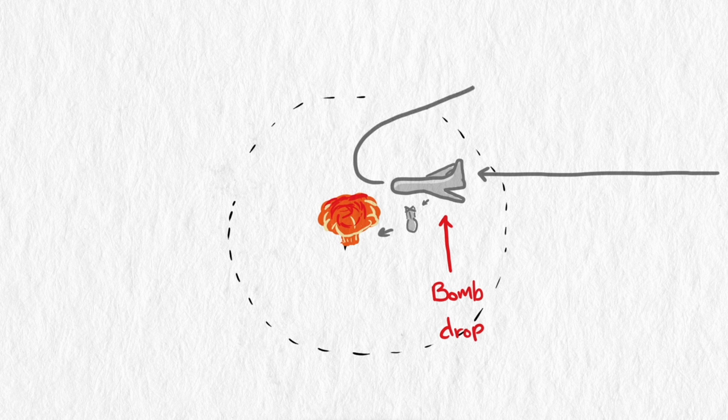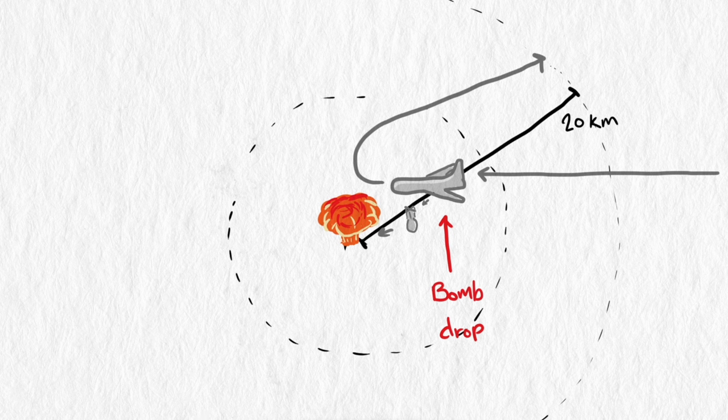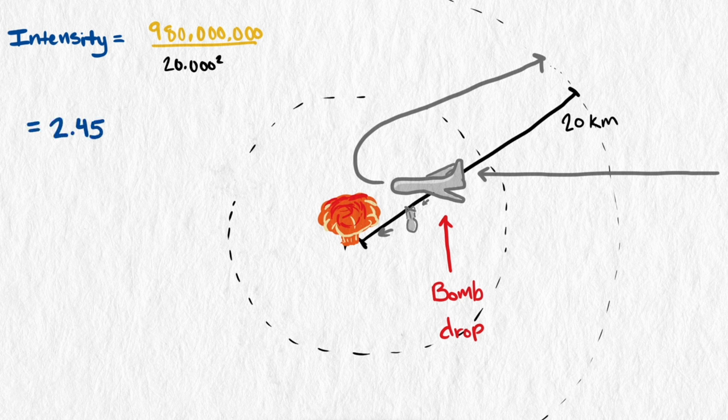Oppenheimer told the pilots to turn hard as soon as the bomb was dropped, keep turning until they were heading away from the bomb, and go full throttle. This would get them to about 20 kilometers away when the first blast hit. This would only be about 2.5 g's, easily survivable.